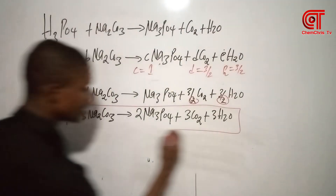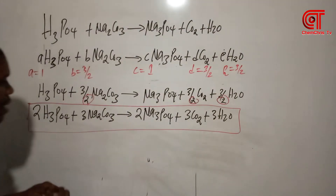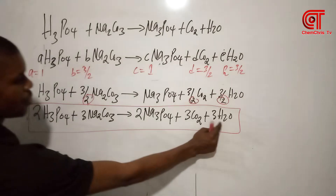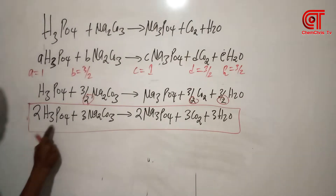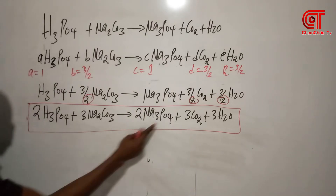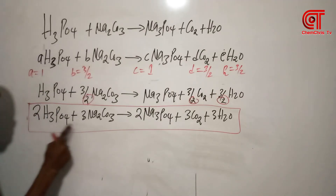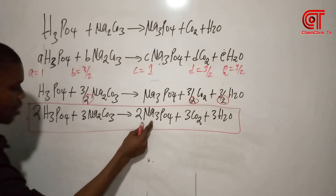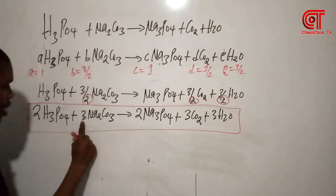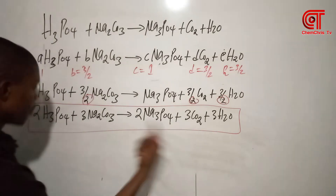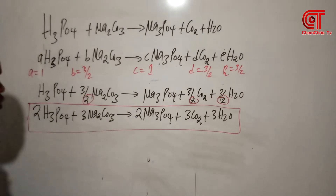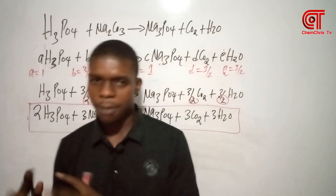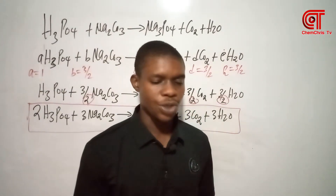You can checkmate that it is balanced: hydrogen — 6 on the left, 6 on the right; phosphorus — 2 on each side; sodium — 6 on each side; carbon — 3 on each side; and oxygen is also balanced. These are the steps to use the Ojibre method to balance a chemical equation.